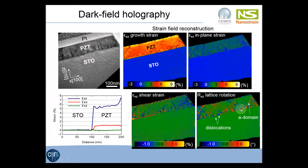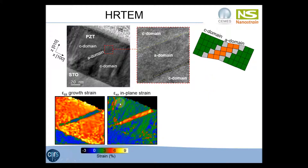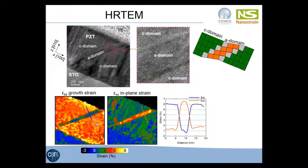To improve the resolution, we can use high-resolution imaging. This is a high-resolution image of an A domain between two C domains. In the A domain, the C parameter is in the in-plane direction, so the lattice is rotated by 90 degrees compared to the C domain. These are two strain maps calculated by geometrical phase analysis — the strain in the growth direction and the strain in the in-plane direction. The colors are inverted between the two images because the C and A parameters are inverted in the A and C domains. Profiles across the domain show a variation of about 5%, corresponding to the difference between the A and C parameters.